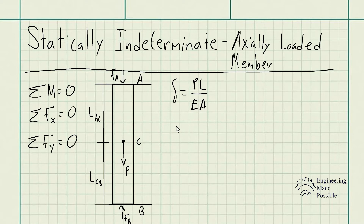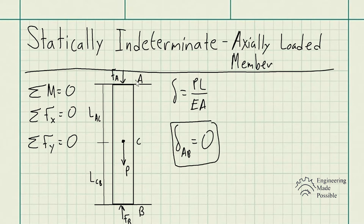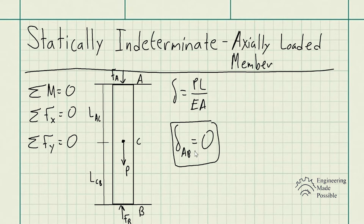You will need an additional relationship: the deformation from point A to B being equal to zero. We know this because the rod is constrained between two walls, so it wouldn't physically be possible for it to elongate or stretch further. Therefore the deformation of this rod equals zero, and this is the additional relationship needed to solve for the unknowns.